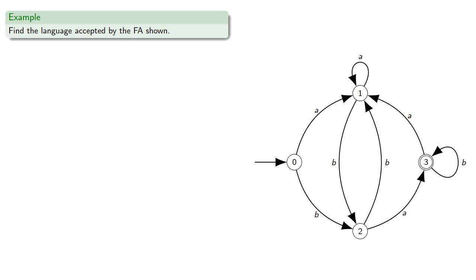So let's find the language accepted by this finite automaton. So again, the language will be everything that will take you from 0 to 3, not passing through any state numbered higher than 3.